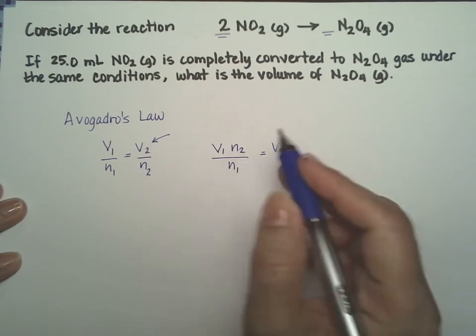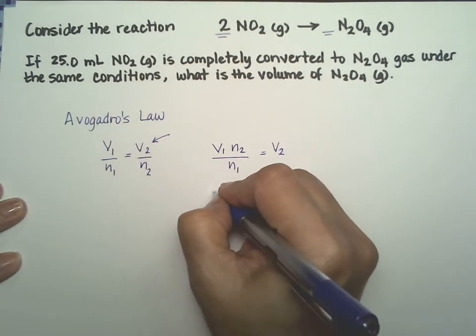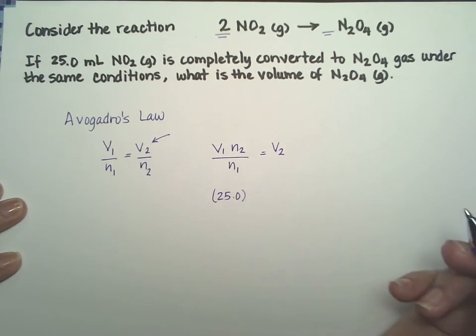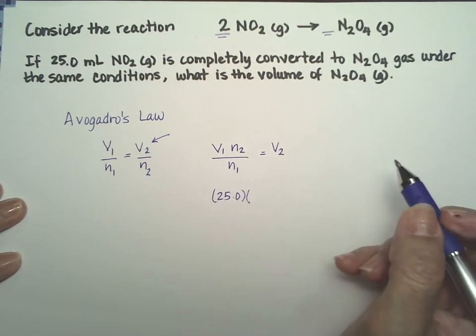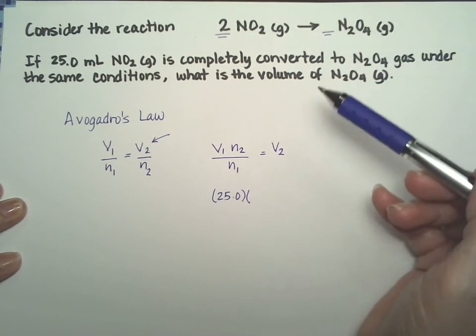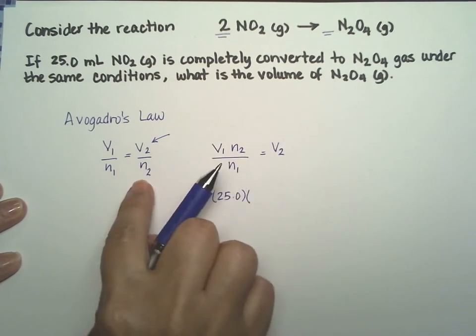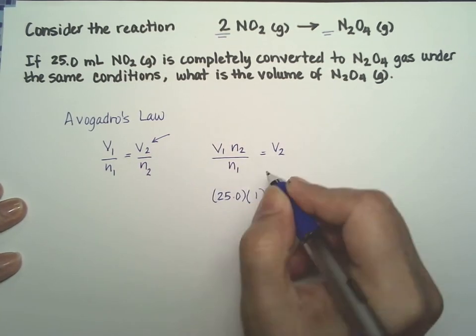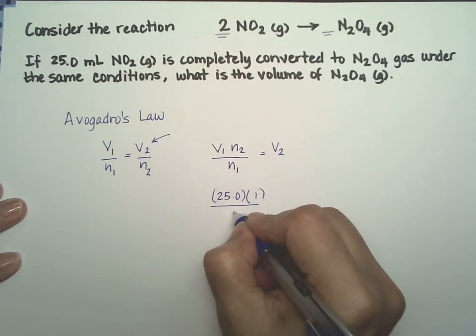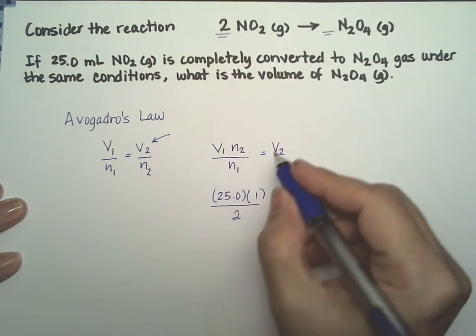And now all we have to do is just put our numbers in. So the first volume is 25, the initial volume, and we form only one mole of the product, so the final number of moles is only one. But we actually start with two moles, so we're going to put two as an initial number.